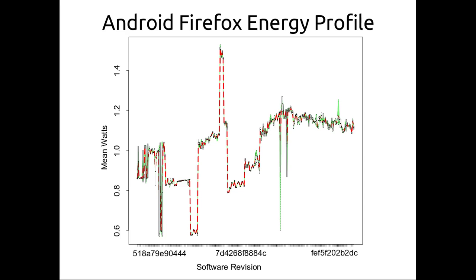An example of an energy profile — the kinds of measurements we take from, say, Android Firefox — would be tests run across every single revision we could build, with power measurements of those tests. Some tests didn't have a lot of variance, some had lots. You can see that at the start there was a lot of variation in runtime behavior. It might have gotten worse power-wise, and then in the last quarter it got a little better.